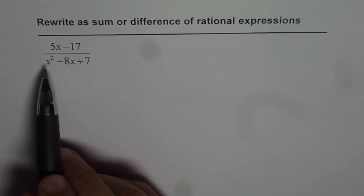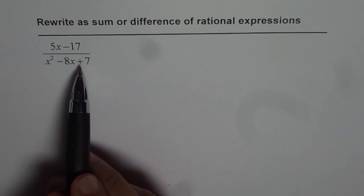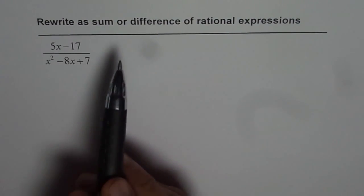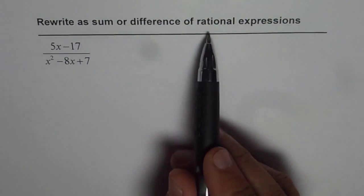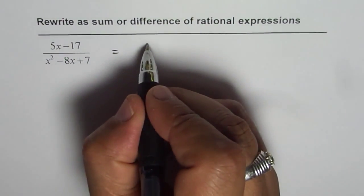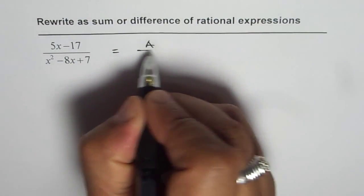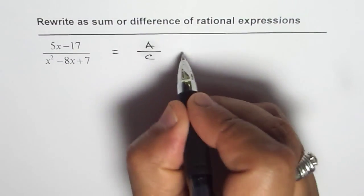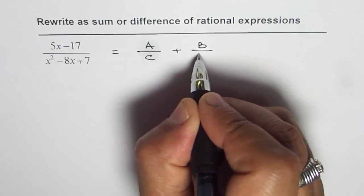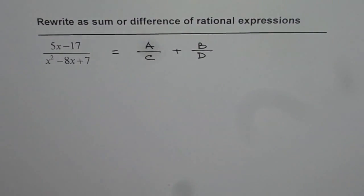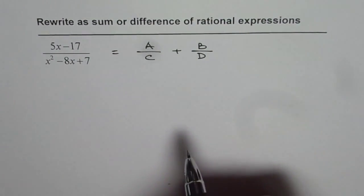We are given rational expression 5x minus 17 divided by x squared minus 8x plus 7, and we need to rewrite this rational expression as sum or difference of rational expressions. That is to say that we have to write this as a over c plus b over d. So that is how we have to write the sum or difference of two rational expressions.